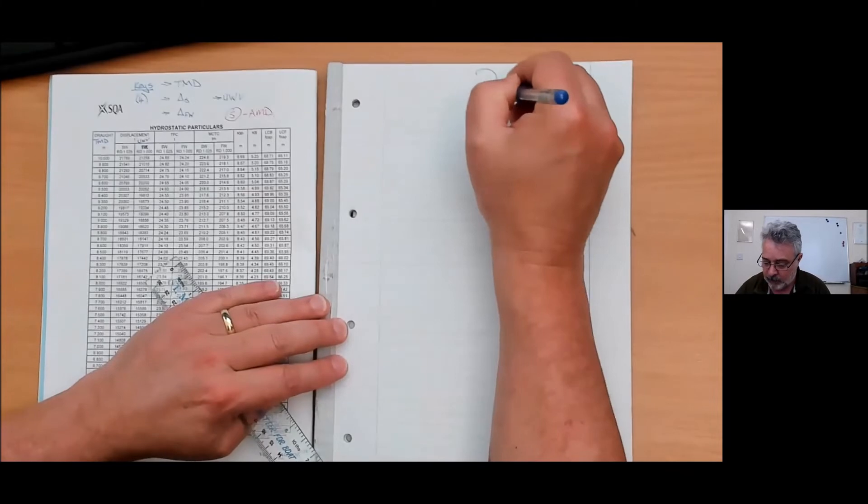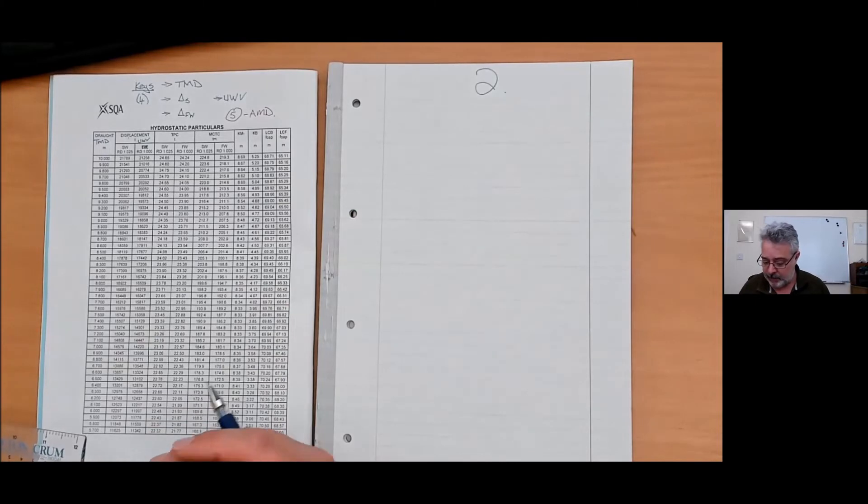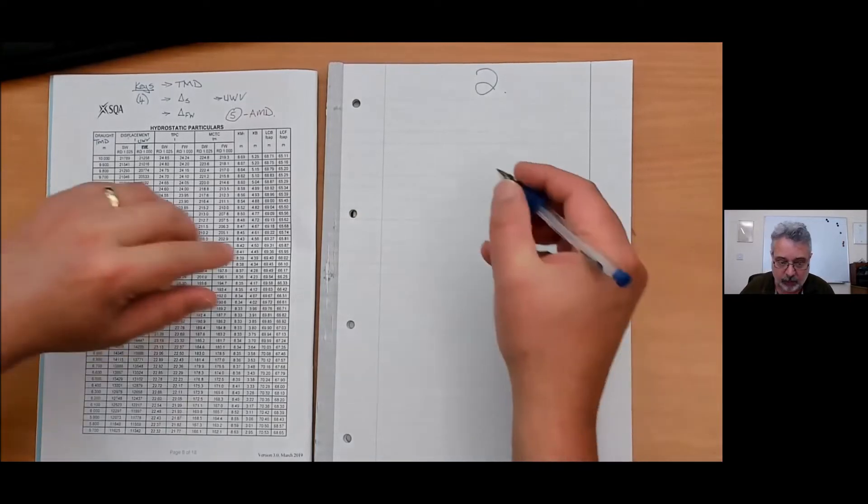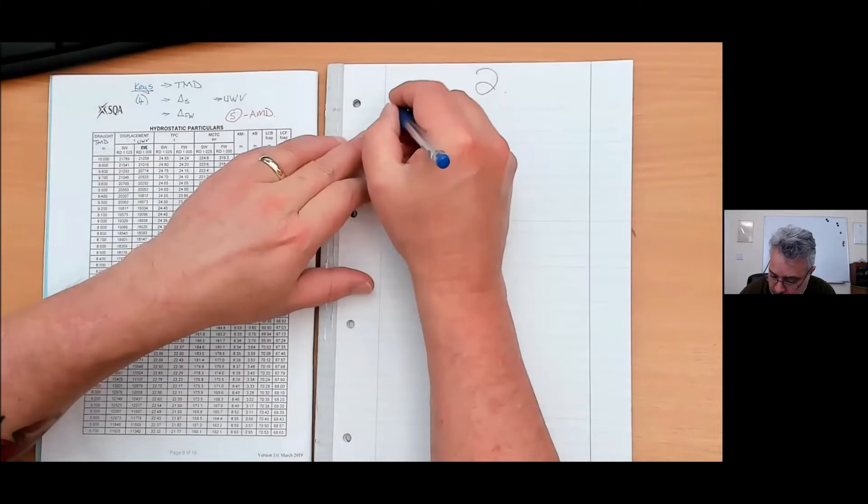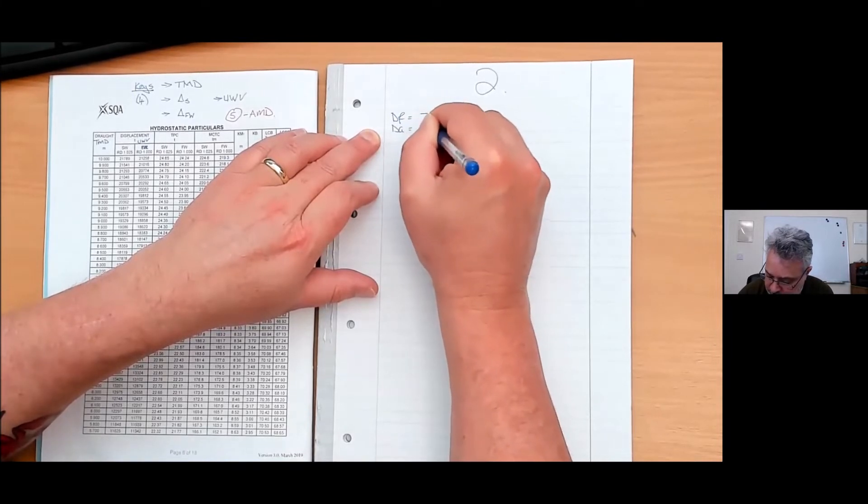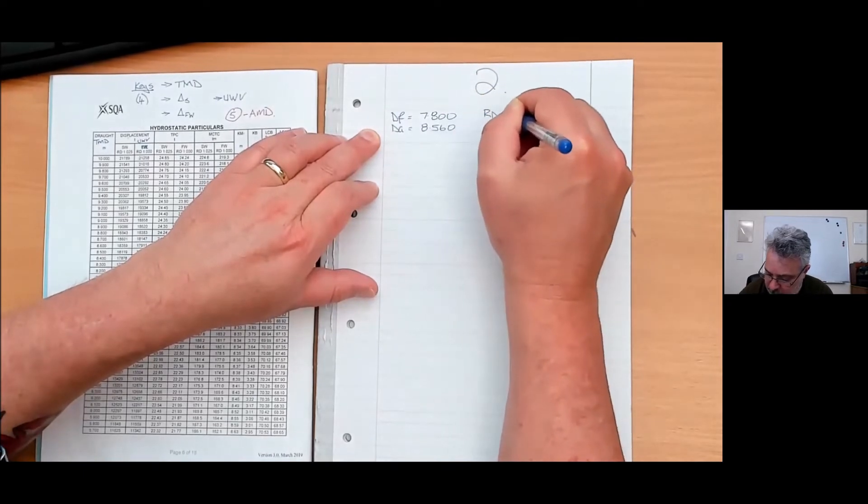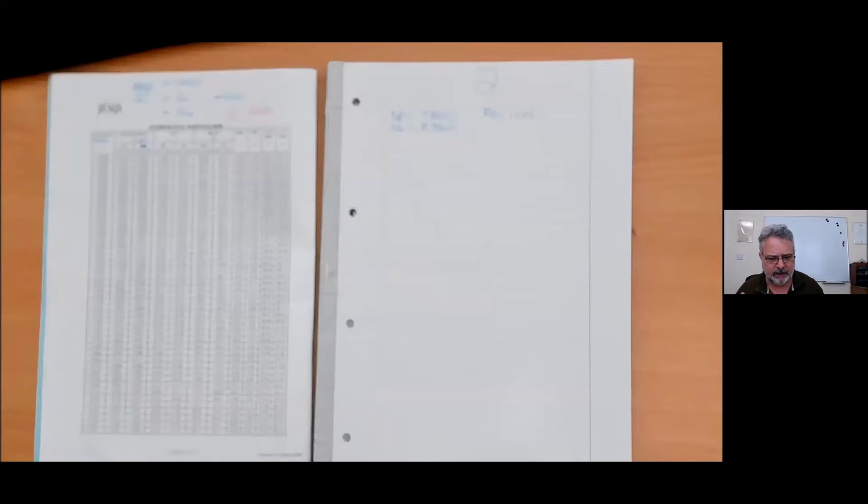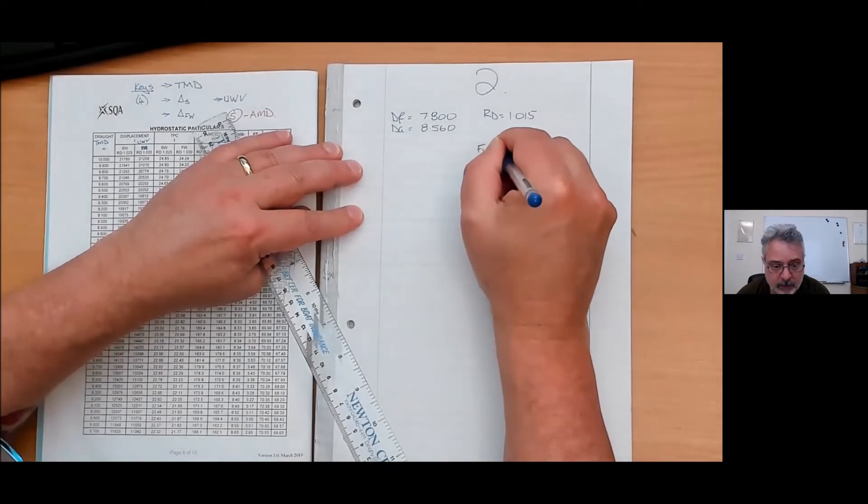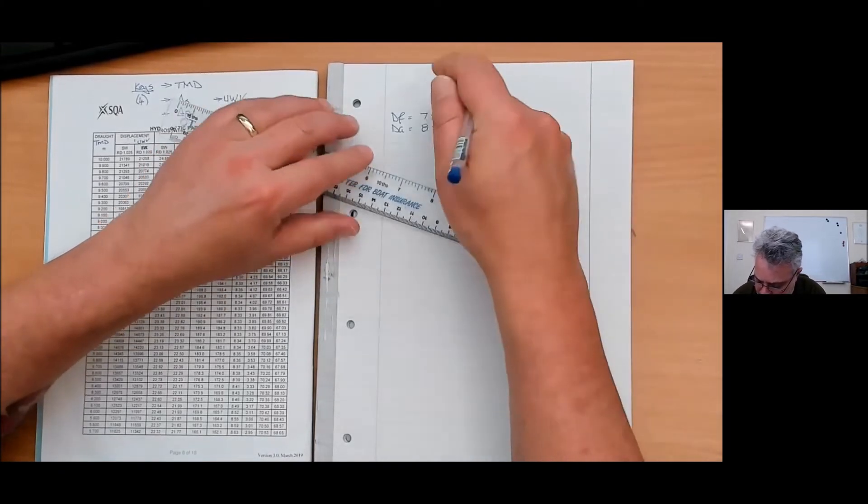Top center, question number. Make it easy for the marker to find the page that they're marking. Let's have a look and pull some data around. Question two, draft forward 7.8, draft aft 8.56, RD 1.015. I don't have to write the RD, but by writing it, it puts it back onto my mind. I'm going to remember that.